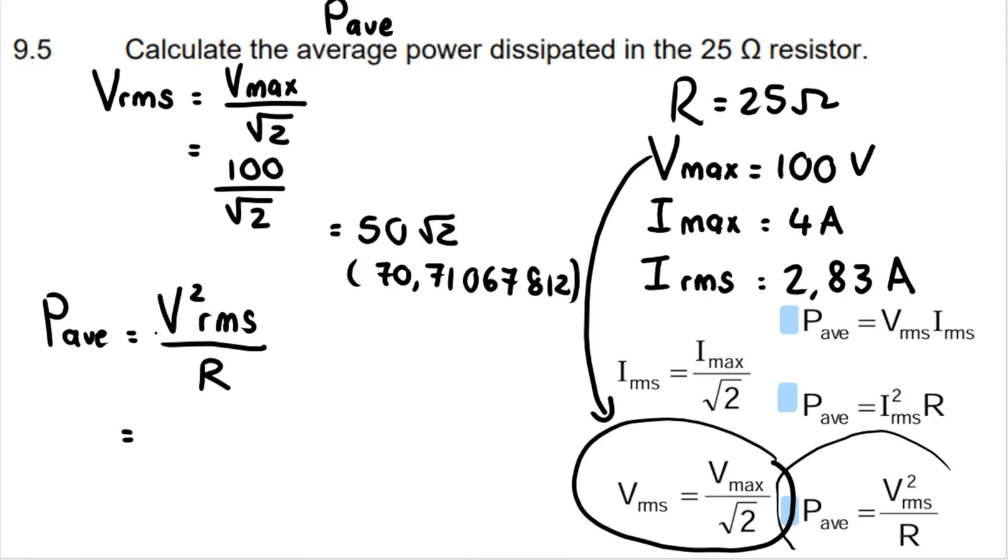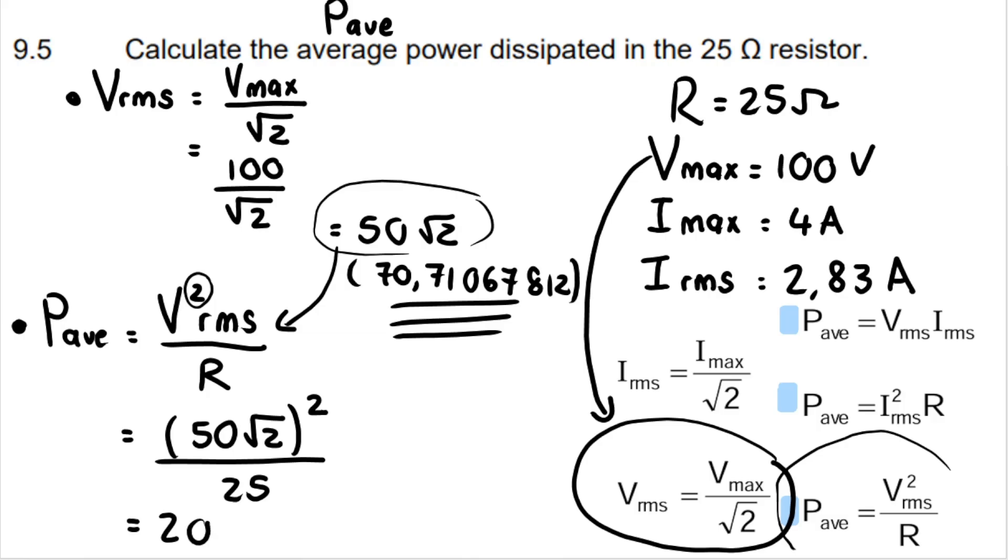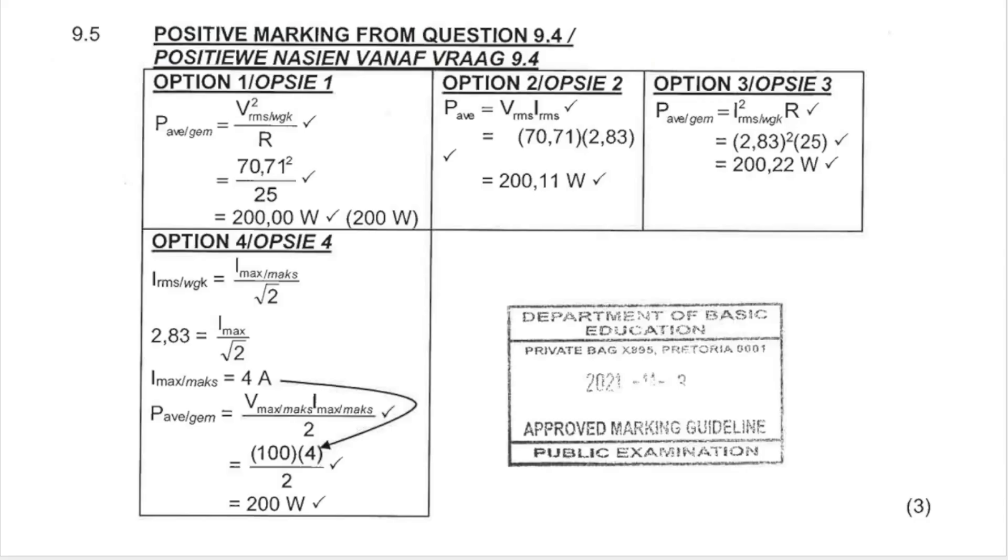Note how if I decide to go this route with using this formula and then this formula, I'm not allowed to round this off because I'm in the middle of a question. So what I will do is if I want to make use of this v rms value over here, I'm going to just keep it as 50 square root 2, and then we square it because of the formula, divided by r, which is 25. And when I do that, I get exactly 200 watts.